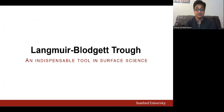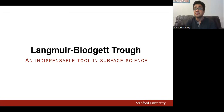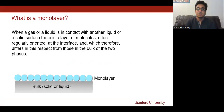The Langmuir-Blodgett trough, or LB trough, is an indispensable experimental tool in surface sciences. It is used for studying the behavior of monolayers of molecules at the air-water interface and measuring fundamental properties like how much area a molecule occupies or what the thickness of one molecule is. It is also used to transfer those monolayers to a solid surface for building well-defined molecular architectures for many applications, most importantly in electronics.